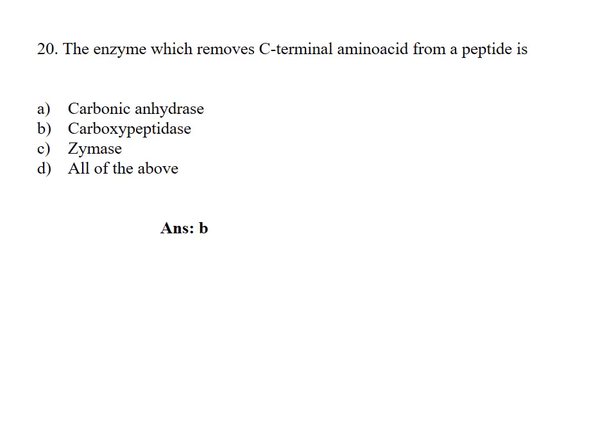The enzyme which removes C-terminal amino acid from a peptide is: Option A, Carbonic anhydrase; B, Carboxypeptidase; C, Zymase; D, All of the above. Answer Option B, Carboxypeptidase.